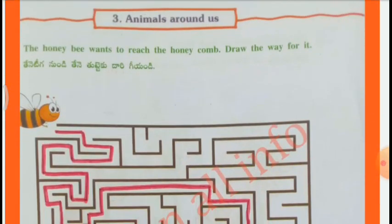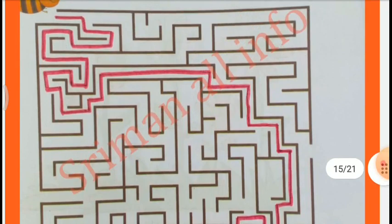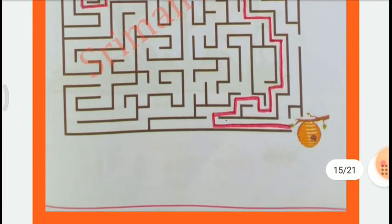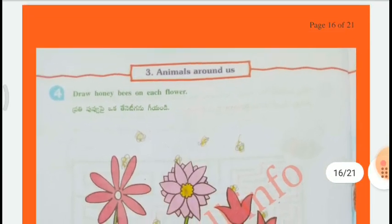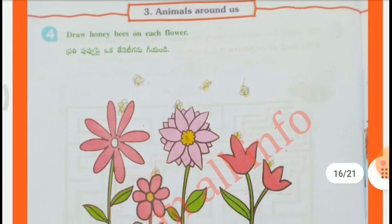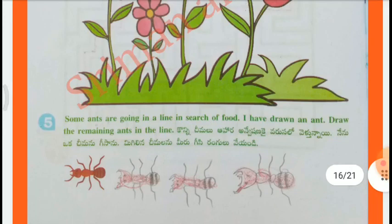The honeybee wants to reach the honeycomb - draw the way for it. Draw a honeybee on each flower. Honeybees on the flowers. Some ants are going in a line in search of food. Draw the remaining ants in the line.